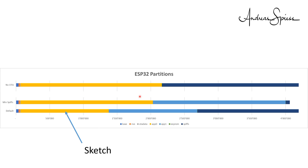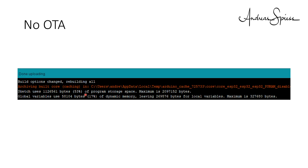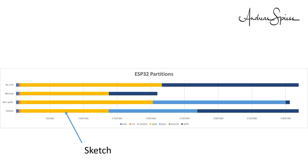With the NoOTA config, you get even a little more space for your sketch — the BLE server uses now only 53%, and the SPIFFS is even larger than in the default configuration. But you cannot do over-the-air updates. You have the choice. The last configuration is not essential for us — it deals with smaller flash chips, and so far I have not encountered any such board.